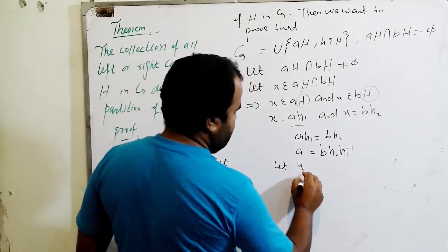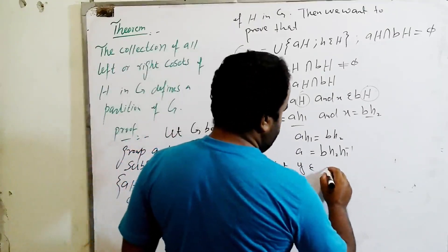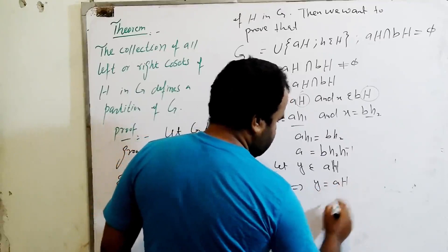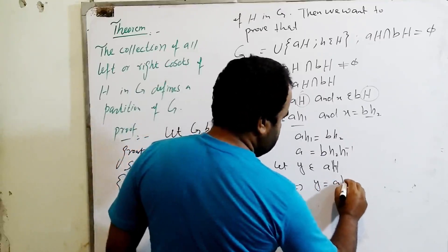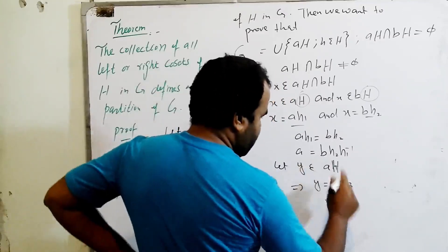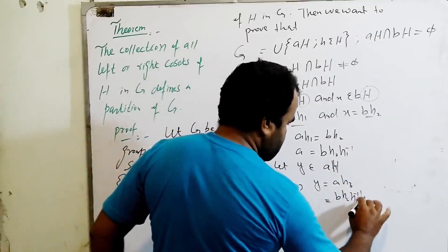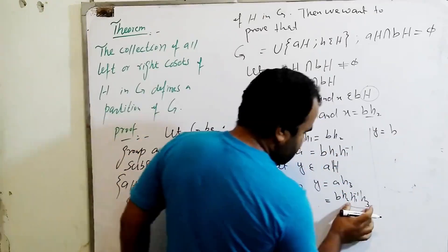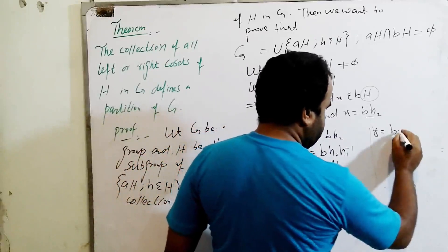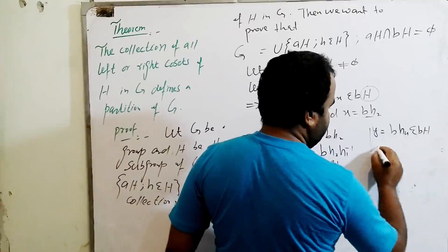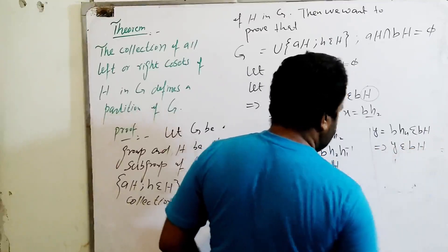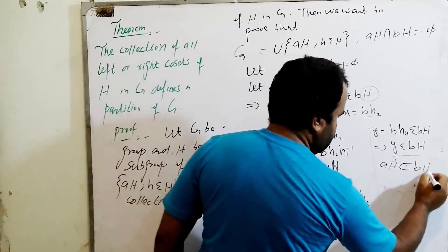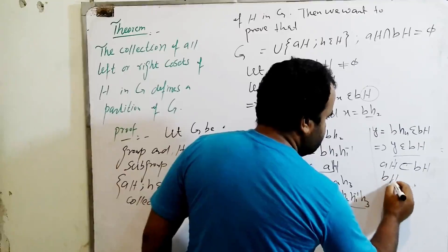Now let Y be an element that belongs to AH. This implies Y equals AH₃. Substituting the value of A, we get Y equals BH₂H₁⁻¹H₃. Let H₄ equal H₂H₁⁻¹H₃, where H₄ belongs to H. So Y equals BH₄, which belongs to BH. This implies Y belongs to BH. So AH is contained in BH. Similarly we can prove that BH is contained in AH, which means AH equals BH.